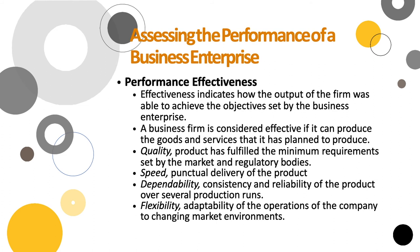We can assess the performance of a business enterprise through performance effectiveness. Effectiveness indicates how the output of a firm achieves the objectives set by the business. When we talk about effectiveness, we consider quality — whether the product fulfills minimum market and regulatory requirements — speed, which is how quickly a process is completed, dependability, which is how consistent and reliable the production is, and flexibility, which is how well a business adapts to a changing environment.